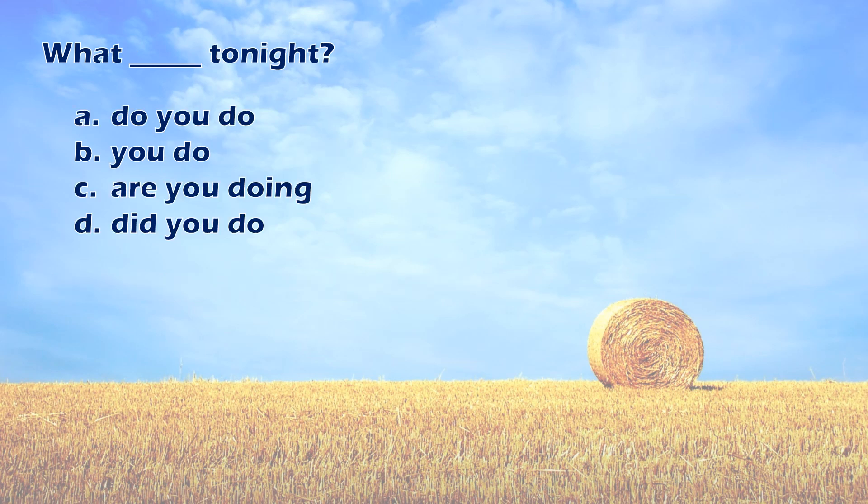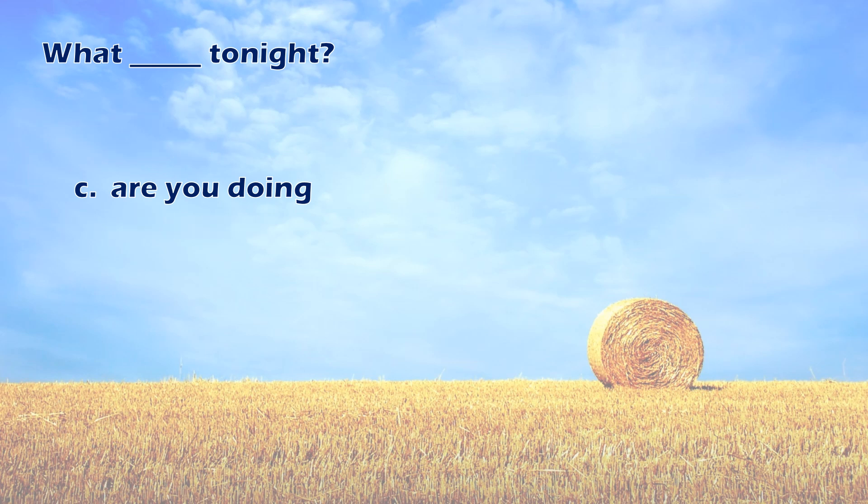What blank tonight? A. Do you do. B. You do. C. Are you doing. D. Did you do. The answer is C. Are you doing. What are you doing tonight?